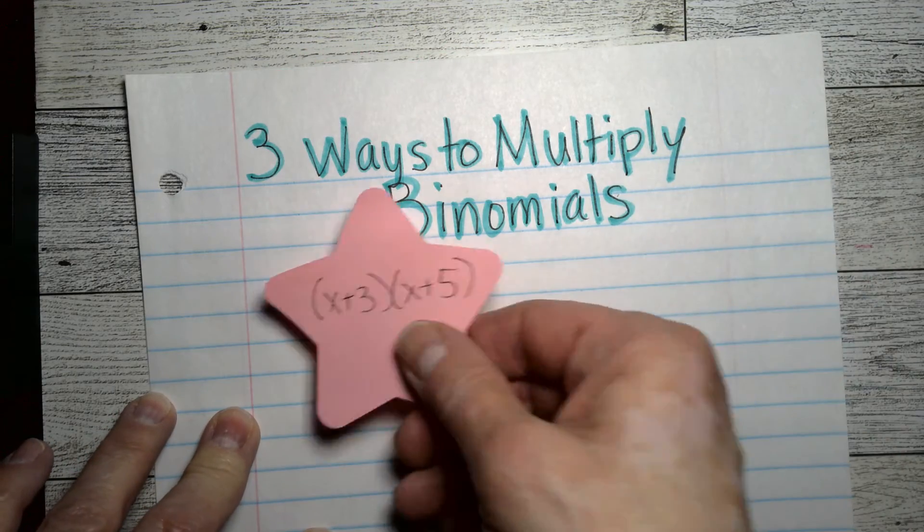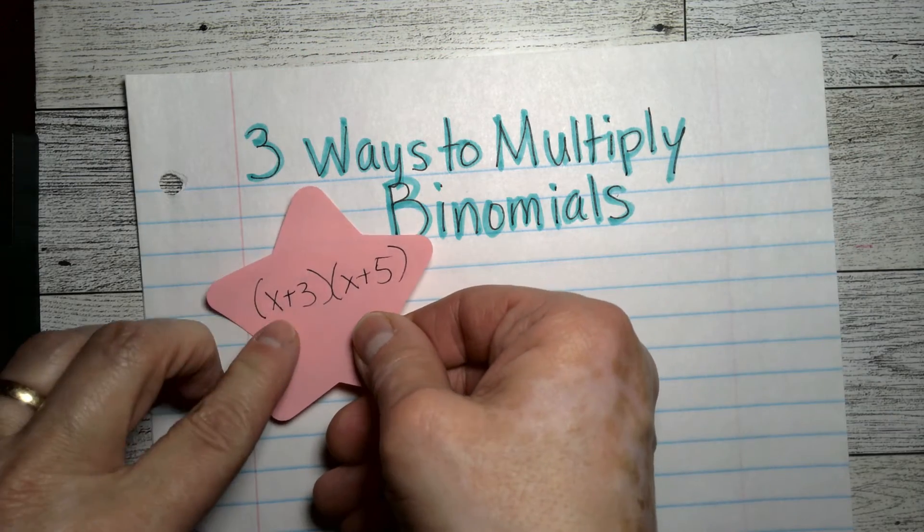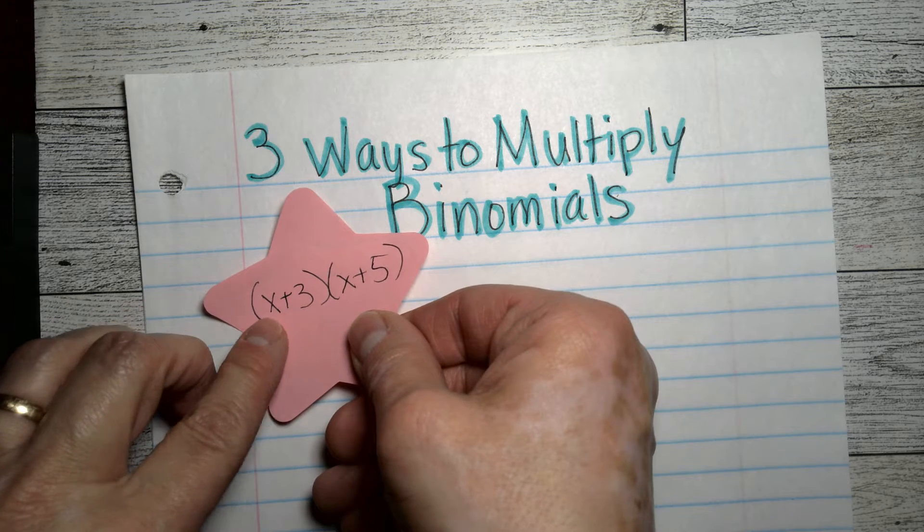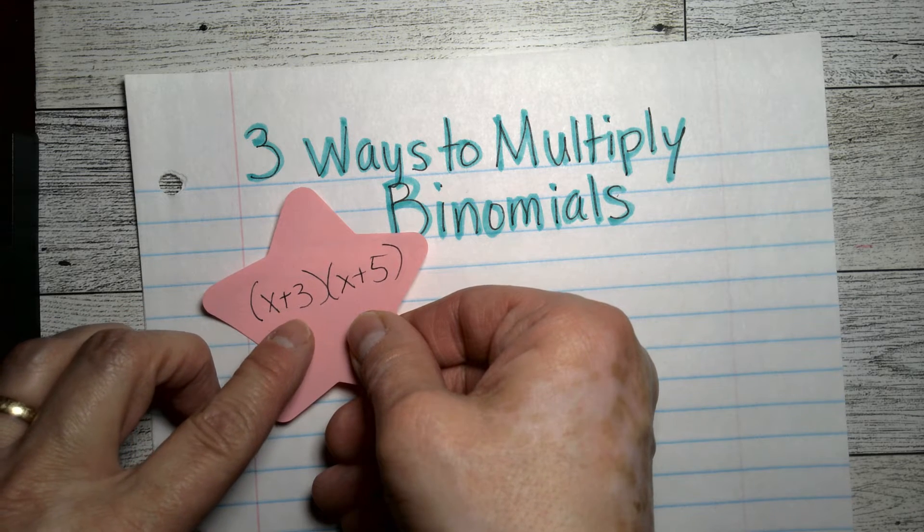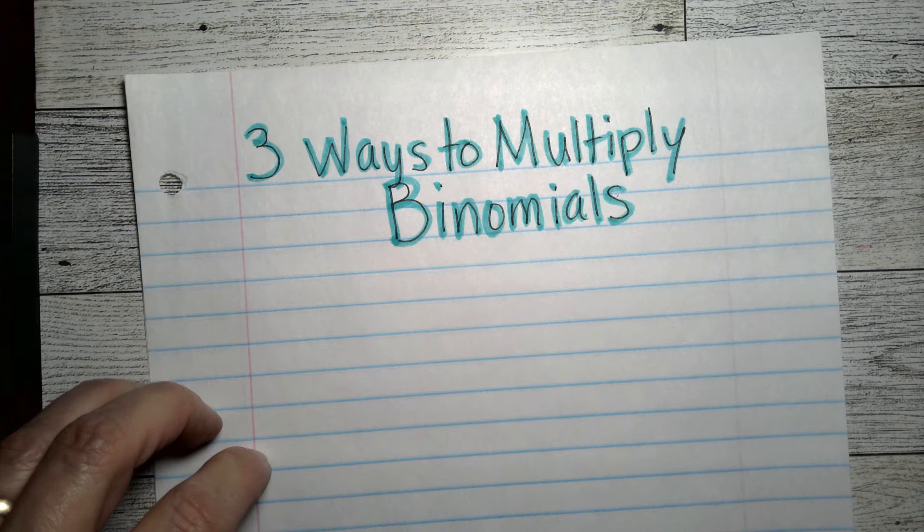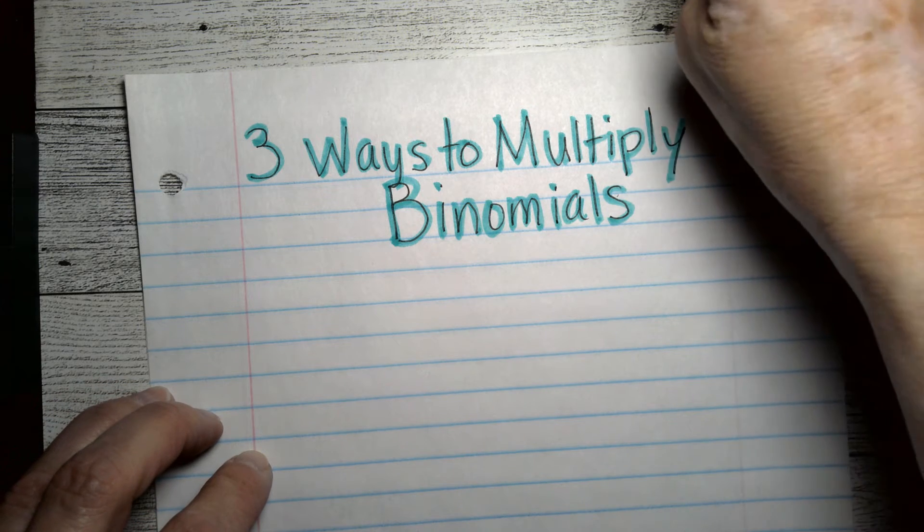Alright, so binomials have two terms. So that thing has two terms. Terms are separated by plus and minus signs. So that's why they're called binomials because there's two terms there.